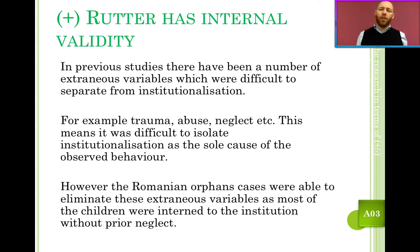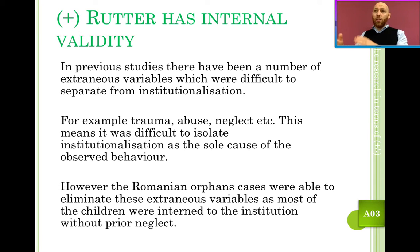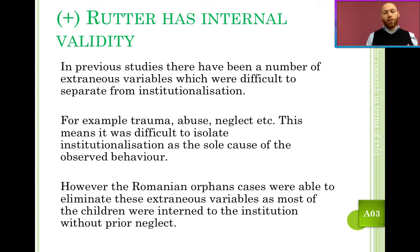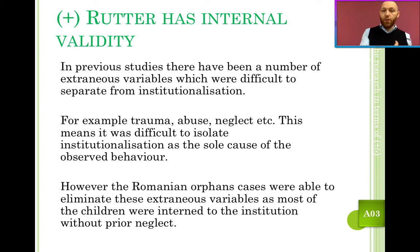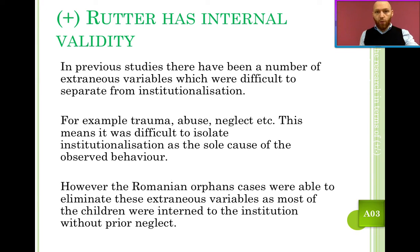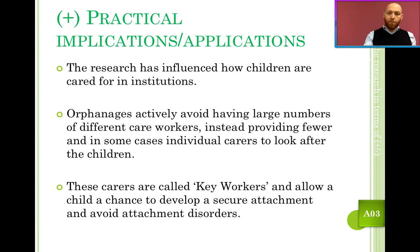Trauma, abuse, neglect, and children being separated from their parents are all possible confounds, so saying institutionalization was the sole cause isn't entirely fair. However, in the case of the Romanian orphans, many were placed there at such a young age that very little physical or emotional abuse could have actually occurred. So we are dealing more or less with the effects of institutionalization, though Kagan's temperament hypothesis may still be a factor.